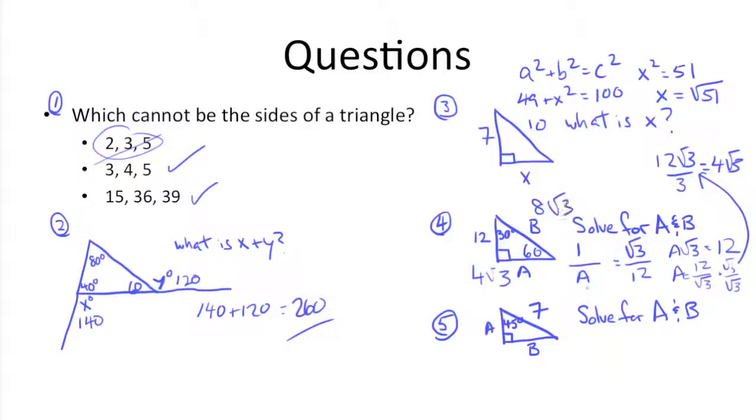And number five, solve for a and b again. Now in this time, we know that this is a 45-45-90 triangle, because again, the angles have to add up to 180. If that's the case, we know that sides a and b are normally represented by 1, 1, and the hypotenuse being root 2.